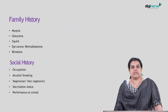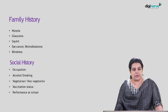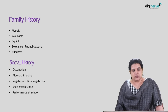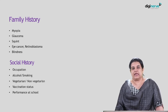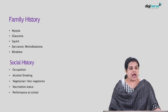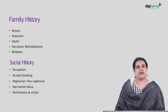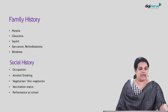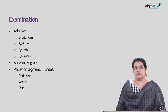Ask about positive family history for disorders such as myopia, glaucoma, squint, intraocular tumors like retinoblastoma, and any history of blindness in the family. Social history should include occupation, whether the patient is an alcoholic or smoker, diet (for nutritional deficiency clues), vaccination status especially in children, and school performance — if a child has been performing poorly, they may have poor vision preventing them from seeing the blackboard clearly.